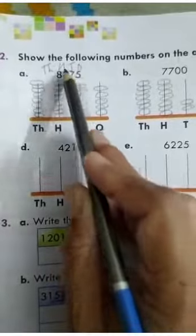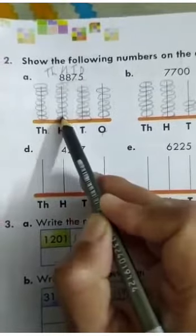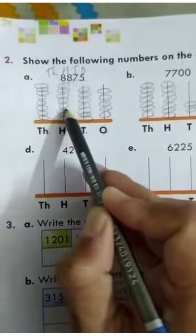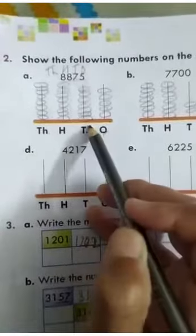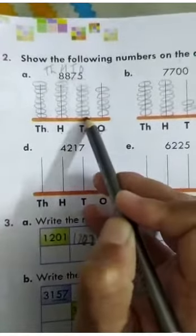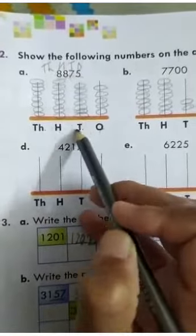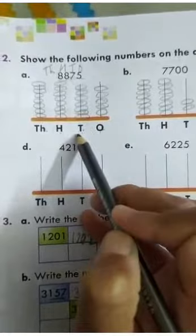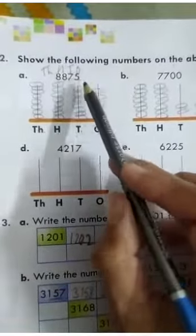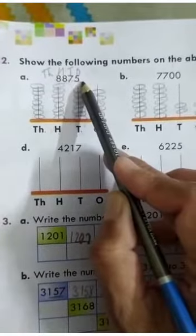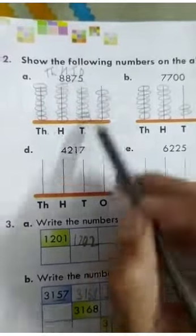Under 100 place value again what is written? 8 — so you will draw 8 beads in 100 place value. Under 10s it is 7, so you will draw 7 beads there. In 1s place value it is 5, so you will draw 5 beads.